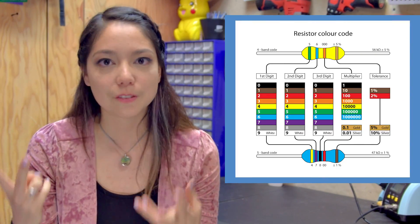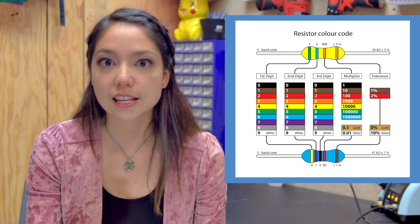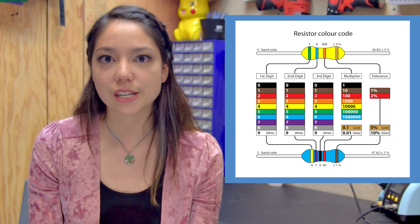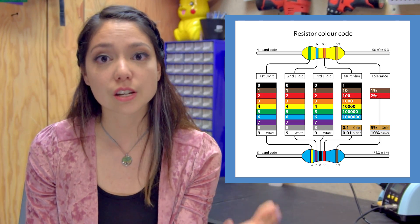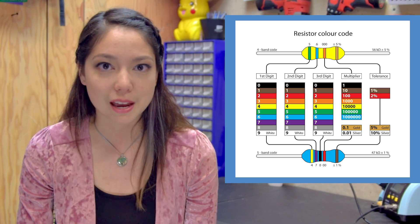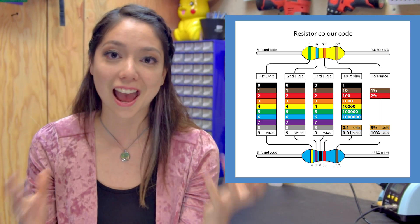When reading a resistor's values, you read from one side to the other. Typically there will be three bands closer together and one slightly farther apart — you want to start on the side where the bands are closer together. The first two bands are the digits or significant figures of the number. The third band is the multiplier, such as 10 to the second, 10 to the third, or 10 to the fourth. The last band is the tolerance — so 5% or 10%. For example, a 100-ohm resistor with 5% tolerance could be anywhere from 95 to 105 ohms and still be within spec. To find the specific values, consult a resistor color coding chart — I have one hanging above my desk and highly recommend you do too.